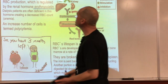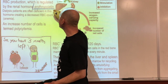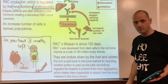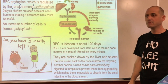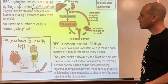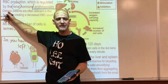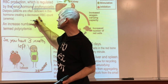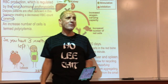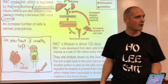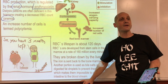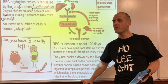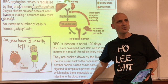RBC production is regulated by erythropoietin, a hormone produced by the kidneys. Dialysis patients - those with kidney problems - are often deficient in this hormone, resulting in a low RBC count causing anemia. Anemia means too few RBCs, which means too little oxygen-carrying capacity, leading to weakness and fatigue. If you're always sluggish and have no energy, anemia could be one reason.